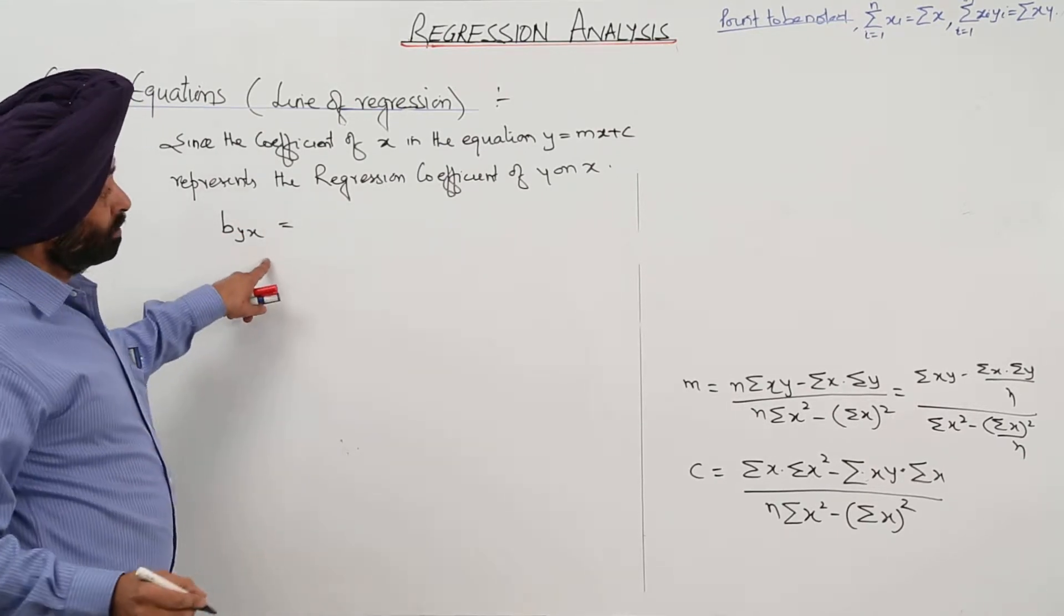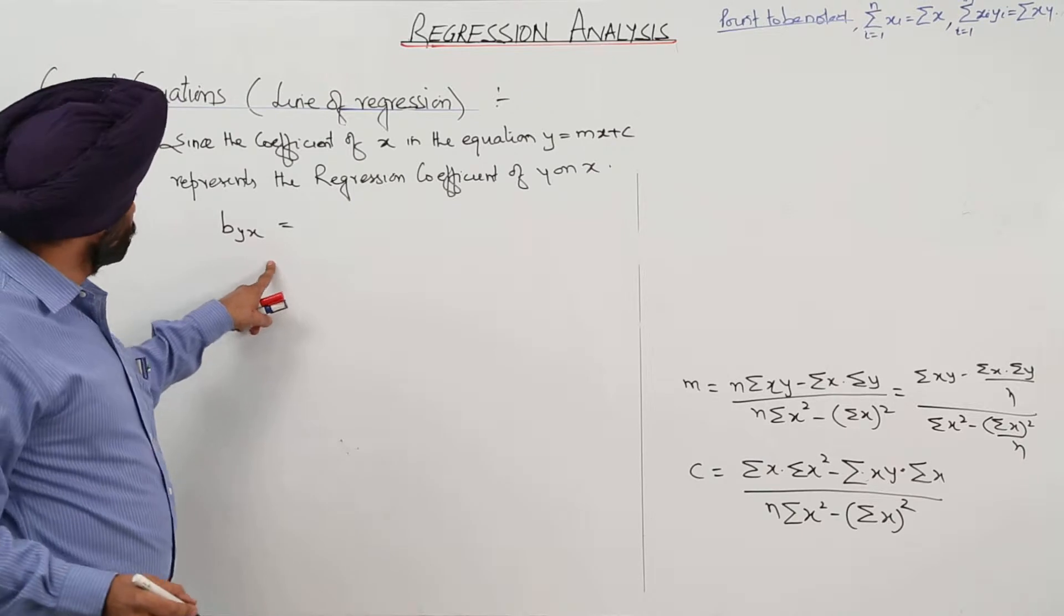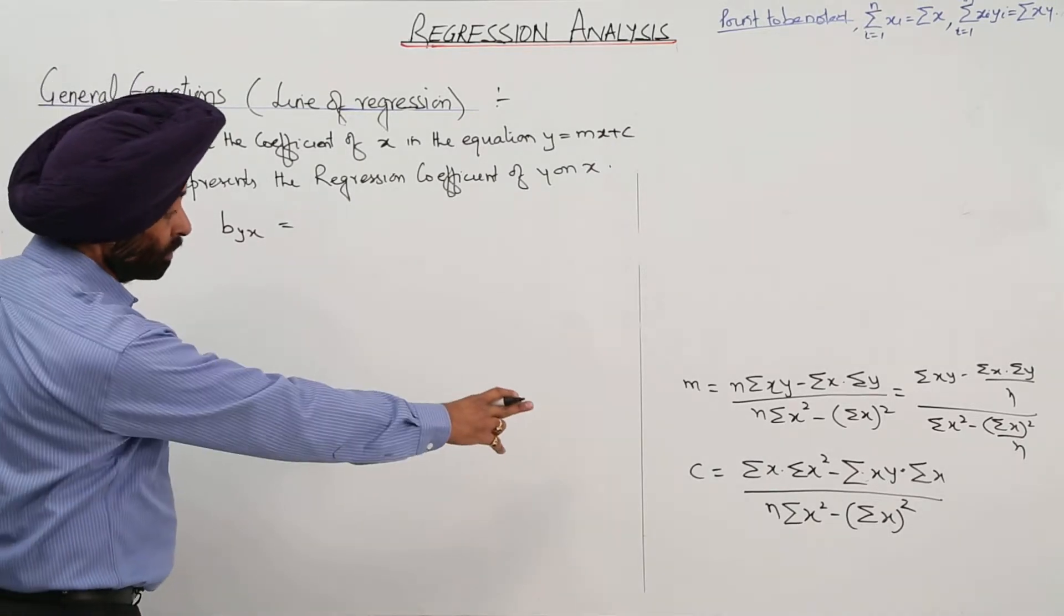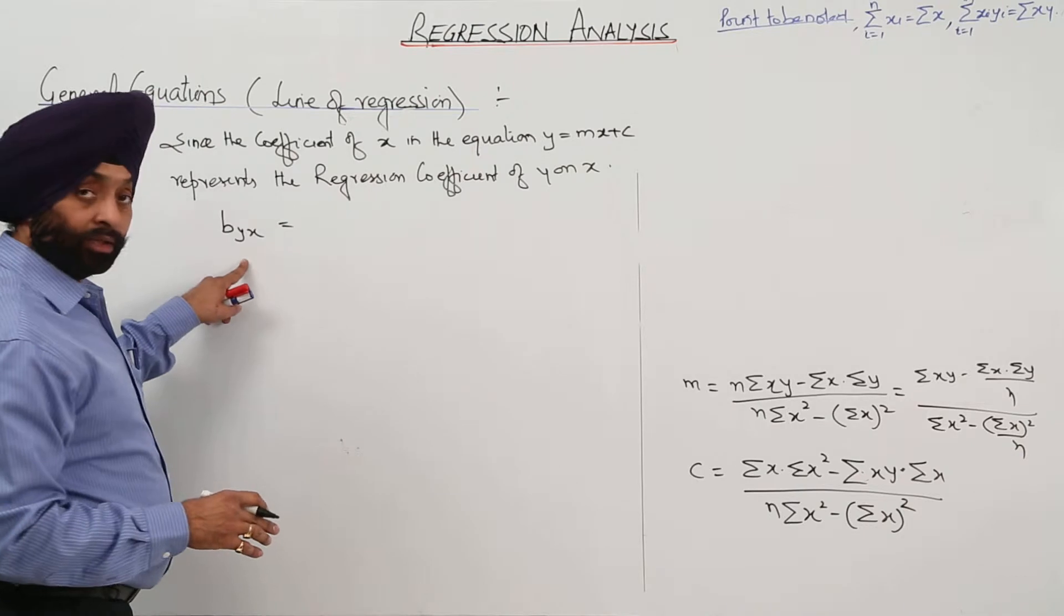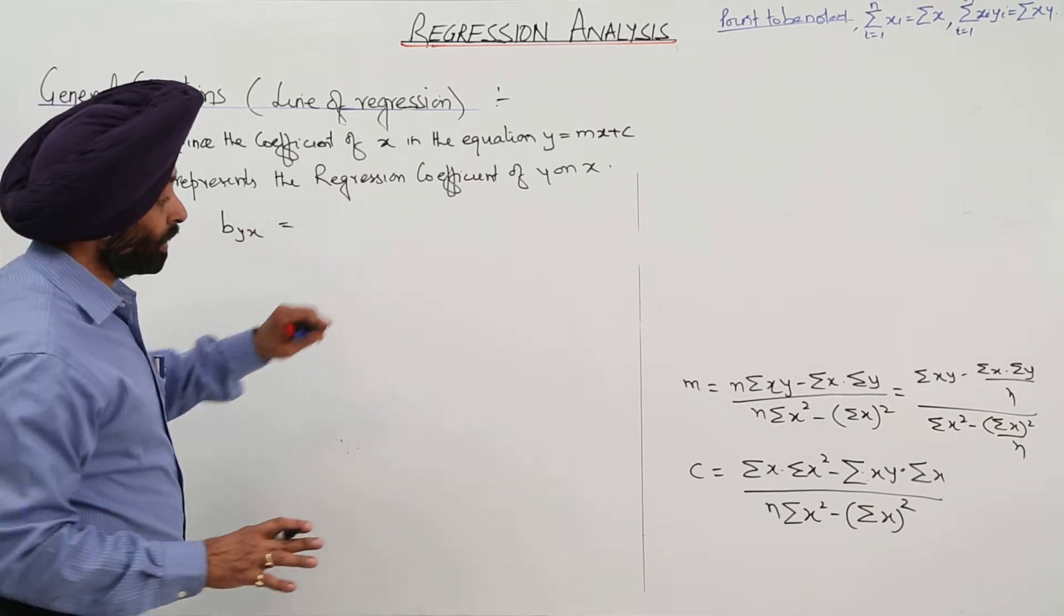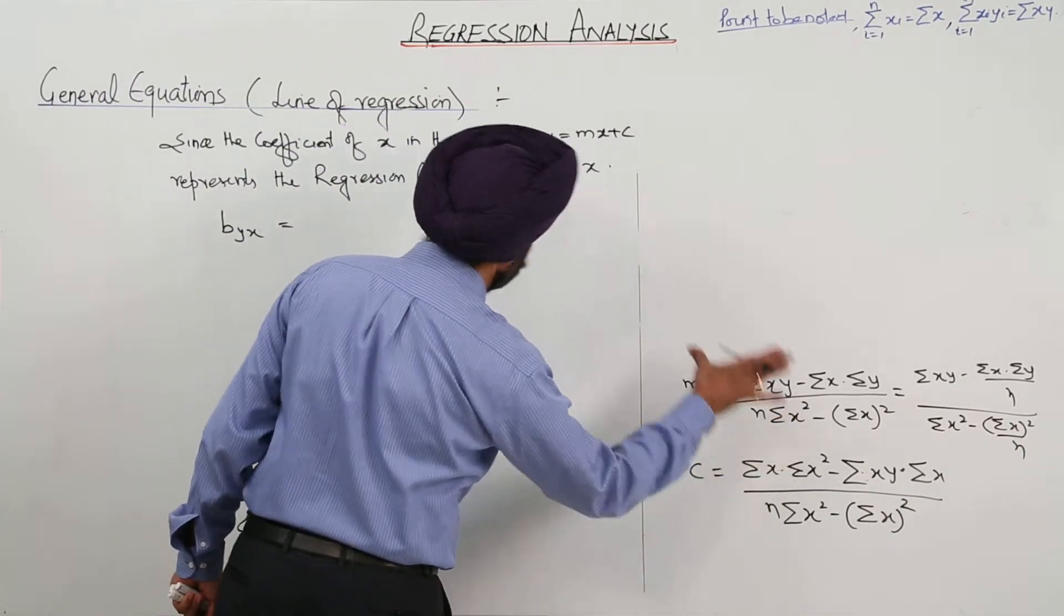This means what? y on x. So what we got it? Now, here we are having two formulas. So we can write it for finding the regression coefficient for this part.